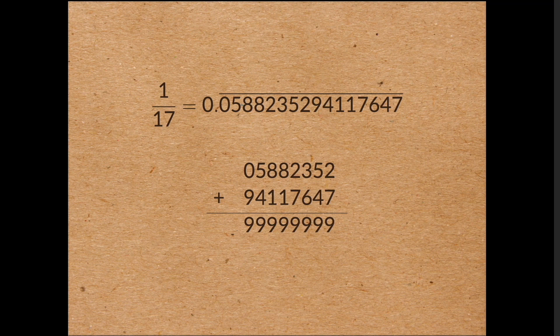The proof that the period is even two-thirds of the time uses a fancy piece of number theory called the Chebotarev density theorem.